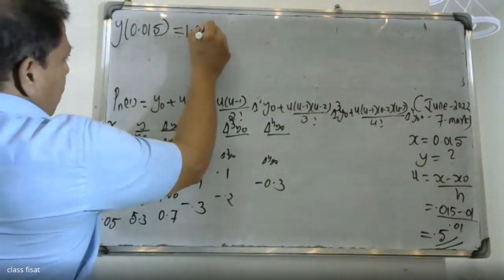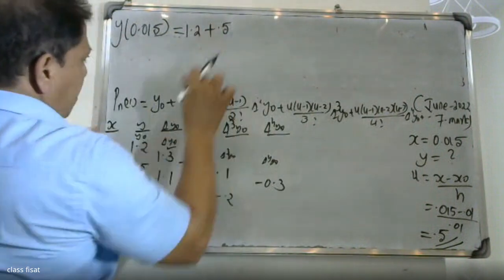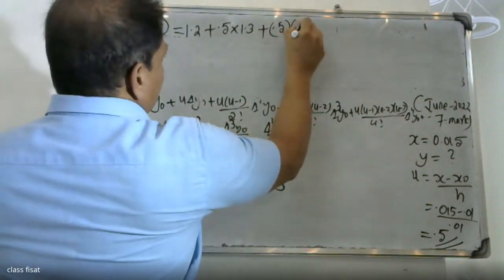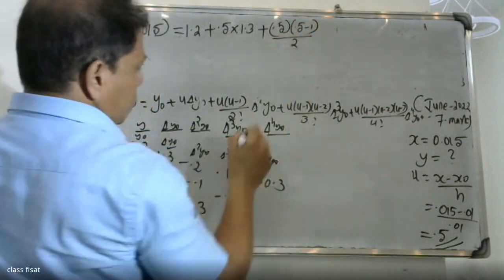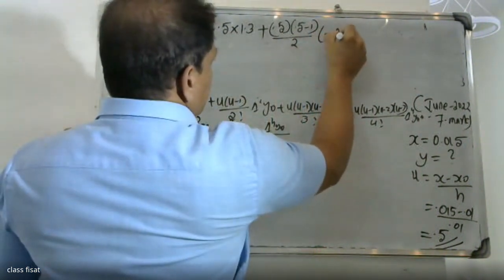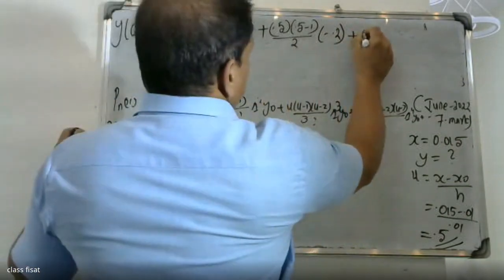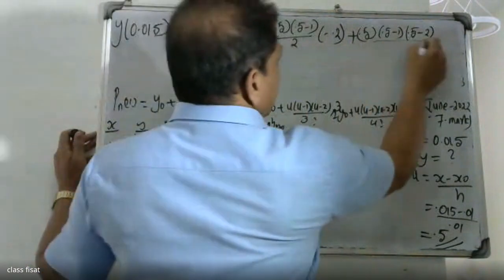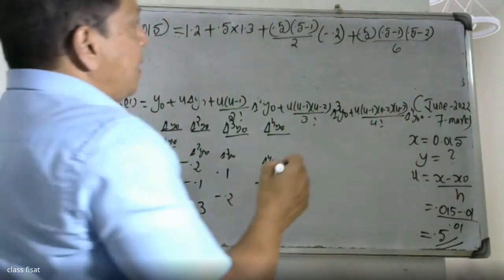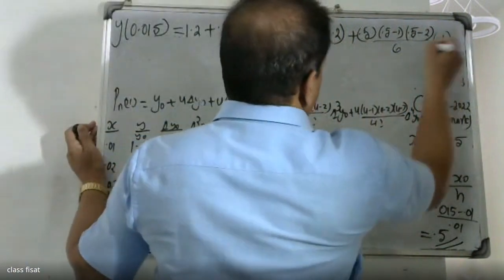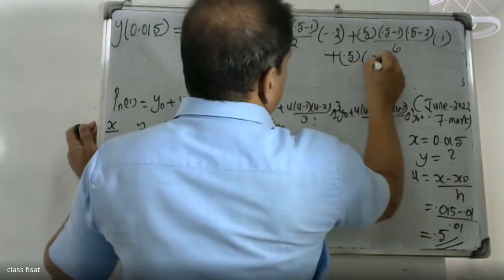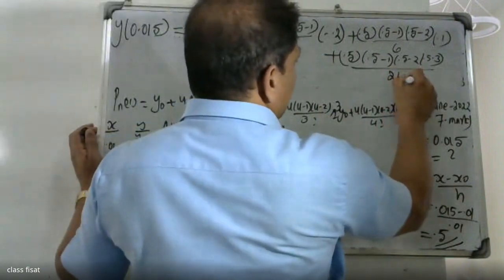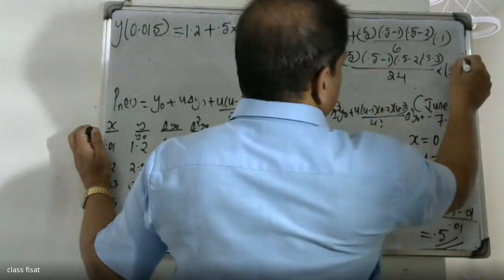Substituting into the formula with u = 0.5: y = 1.2 + 0.5×1.3 + (0.5×(0.5−1))/2 × (−0.2) + (0.5×(0.5−1)×(0.5−2))/6 × (Δ³y0) + (0.5×(0.5−1)×(0.5−2)×(0.5−3))/24 × (−0.2).